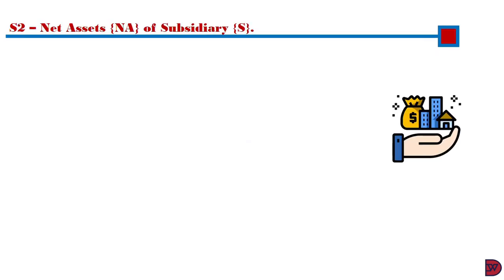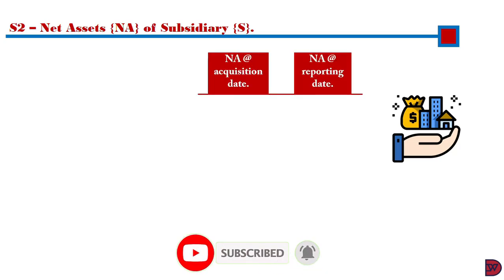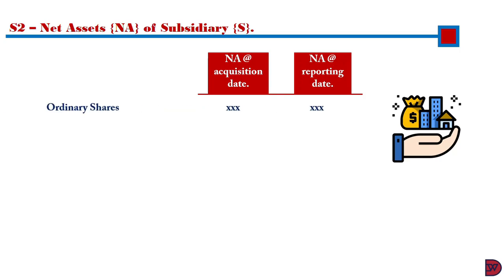Step 2 will be the net assets of the subsidiary. The objective is to estimate the post-acquisition reserves — that is, the amount of profits to be based on the holding entity or entities. Net assets is total assets less total liabilities, which equals all items in the equity section of the statement of financial position. You start with ordinary shares — the figure at acquisition and that at the end. Normally it's the same, but if they issued more shares post-acquisition, the reporting period figure will be different.